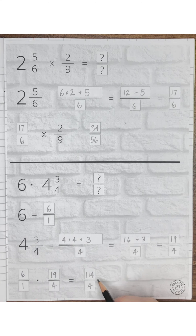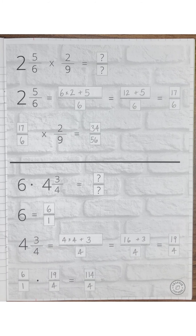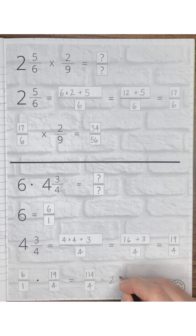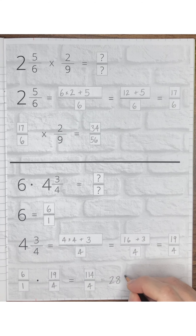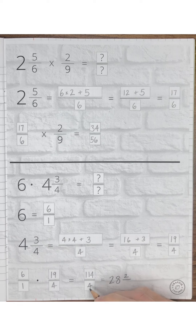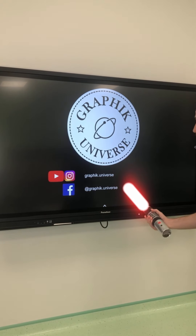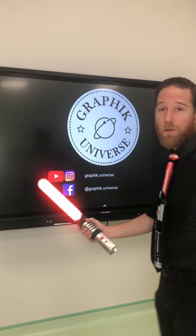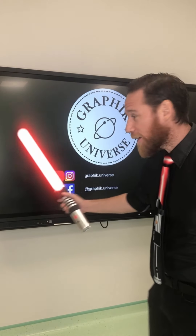To convert this improper fraction into a mixed number, divide the numerator by the denominator. How many fours can go into 114? Twenty-eight. The remainder is 2, which becomes our numerator, and the denominator stays the same, giving us 28 and two-fourths. I hope you found this video useful. If you'd like more educational resources, please subscribe to my YouTube channel, Graphic Universe, and my Instagram. I can also be found on Facebook at Graphic Universe. Thank you!